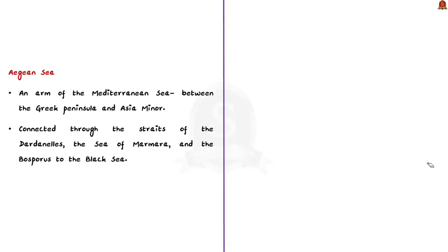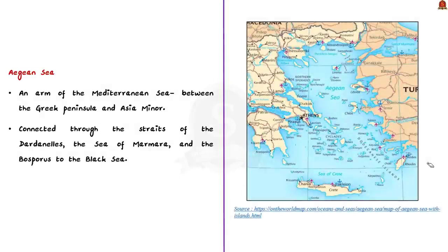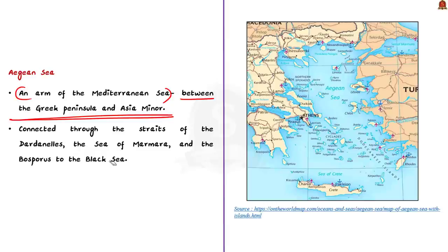Aegean Sea is an arm of the Mediterranean Sea, located between the Greek Peninsula to the west and Asia Minor to the east. To the south of the Aegean Sea lies the Crete Island. Red Sea and Mediterranean Sea are very important from a prelims perspective; Aegean Sea is less important — just go through it in brief.